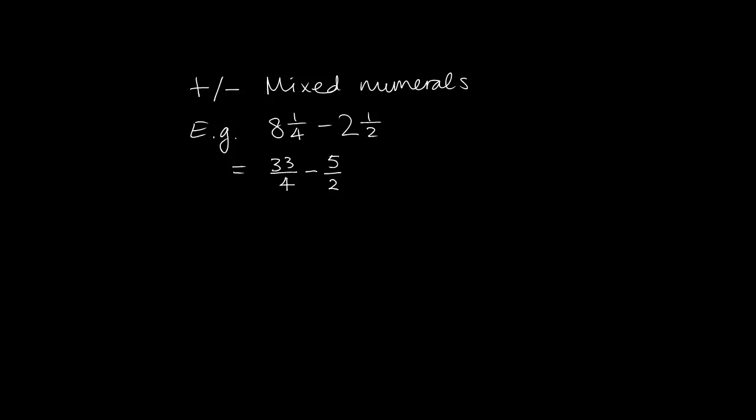So what I've done is rewritten each of those mixed numerals as improper fractions. Now that I've got them as improper fractions, I look carefully at the denominators. In this case the denominators here are different, so I need to change them so that they do have the same denominator before I subtract. So my lowest common denominator in this case will be 4.